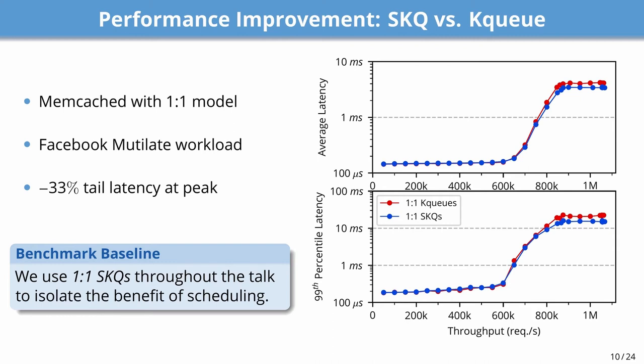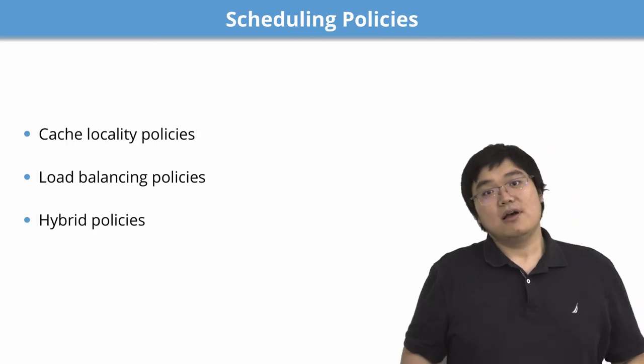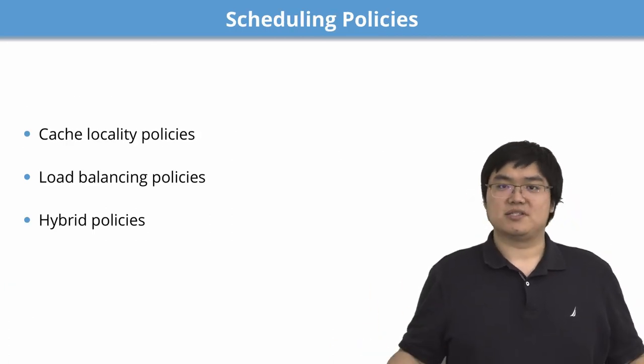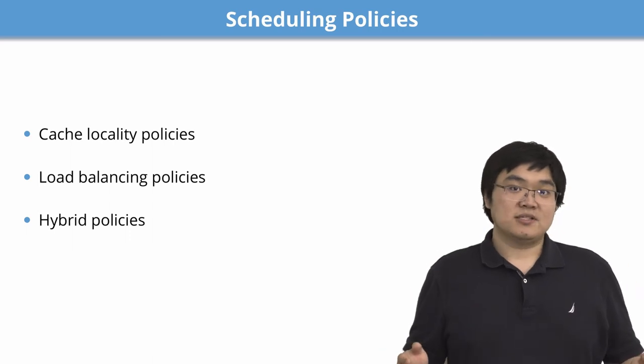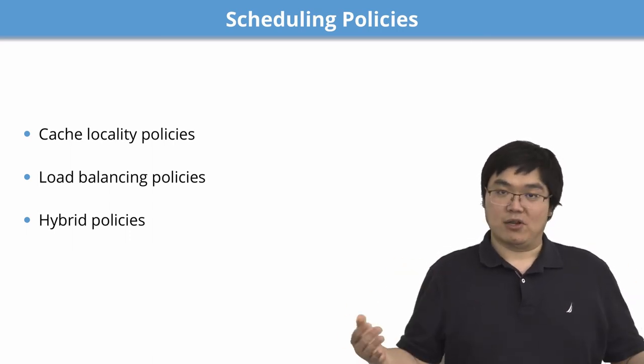We tested both systems in memcached running the Facebook mutilate workload. As shown in the benchmark, SKQ performs equally or better than KQ in throughput and provides a 33% lower tail latency at peak throughput. Throughout the presentation, we will use the one-to-one SKQ as our benchmark baseline to isolate the benefits of event scheduling from architectural improvements. SKQ offers three categories of scheduling policies: cache locality policies, load balancing policies, and hybrid policies.